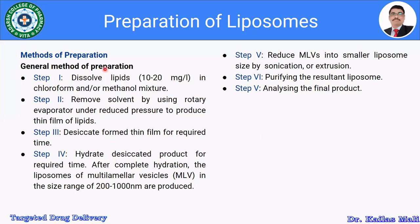The general method comprises approximately seven steps. Step one: dissolve the lipids, 10 to 20 mg per litre, in a chloroform and methanol mixture — that is, dissolve the lipid in the organic solvent. Step two: remove the solvent by using a rotary evaporator under reduced pressure to produce a thin film of lipids — that is the formation of a lipid film by removing the organic solvent.